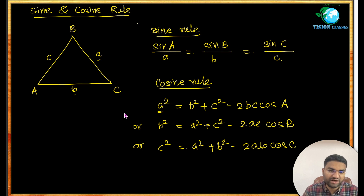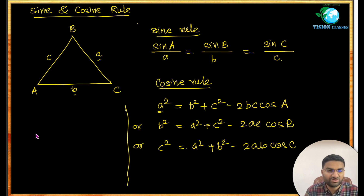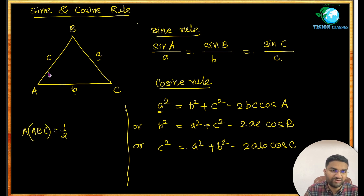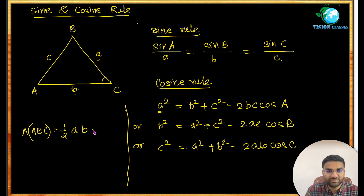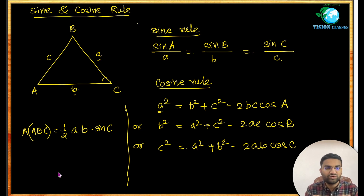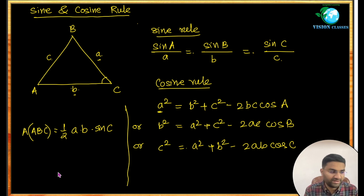If you want to find the area of a triangle using the sine rule, the area of triangle ABC equals one-half times a times b times sine C, where C is the angle between sides a and b. These are the rules you need for any sine and cosine rule questions.